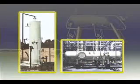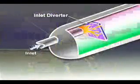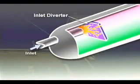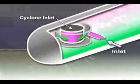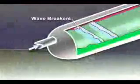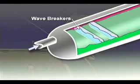Regardless of type, all three-phase separators share certain internal vessel components. Inlet diverters provide the initial gross separation by changing the flow direction as fluid enters the vessel. The deflector baffle shown here is one type of commonly used inlet diverter; another is the cyclone inlet. Wave breakers limit the wave propagation that might otherwise occur in large horizontal vessels.